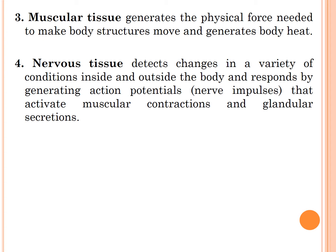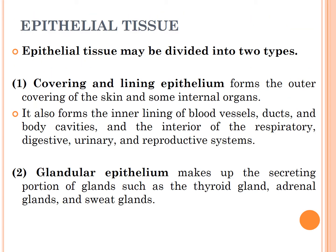Connective tissue stores energy as fat and also provides immunity to disease-causing organisms. The third tissue is muscular tissue, which generates the physical force needed to make body structures move and generates body heat. The last type is nervous tissue, which detects changes in a variety of conditions inside and outside the body and responds by generating action potentials that activate muscular contraction and glandular secretion.